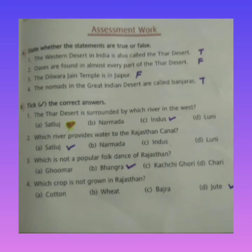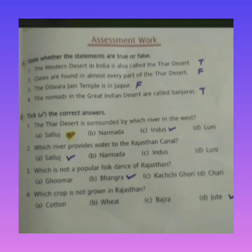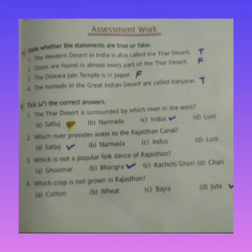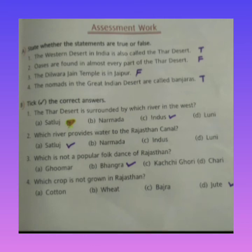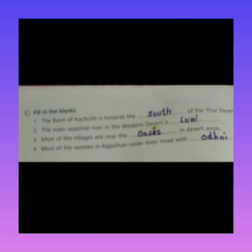Next question: which crop is not grown in Rajasthan? The options are cotton, wheat, bajra, and jute. Students, the correct answer is jute — jute is not grown in Rajasthan. So, next exercise is fill in the blanks.